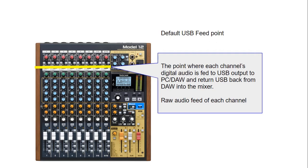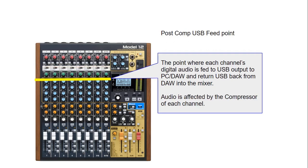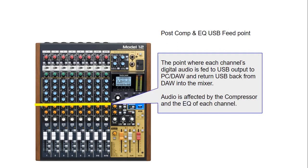The information for the USB channel is picked up right after the gain, here indicated by the yellow bar. This is the default and the recommended point. This way any audio recorded in your DAW is not affected by the compressor or equalization settings on each channel strip, allowing you to adjust compression and equalization later in your DAW. Using the menu system you can change this pickup point for the USB audio to post-compressor, or even post-compressor and EQ, so those settings will also be recorded in your DAW.